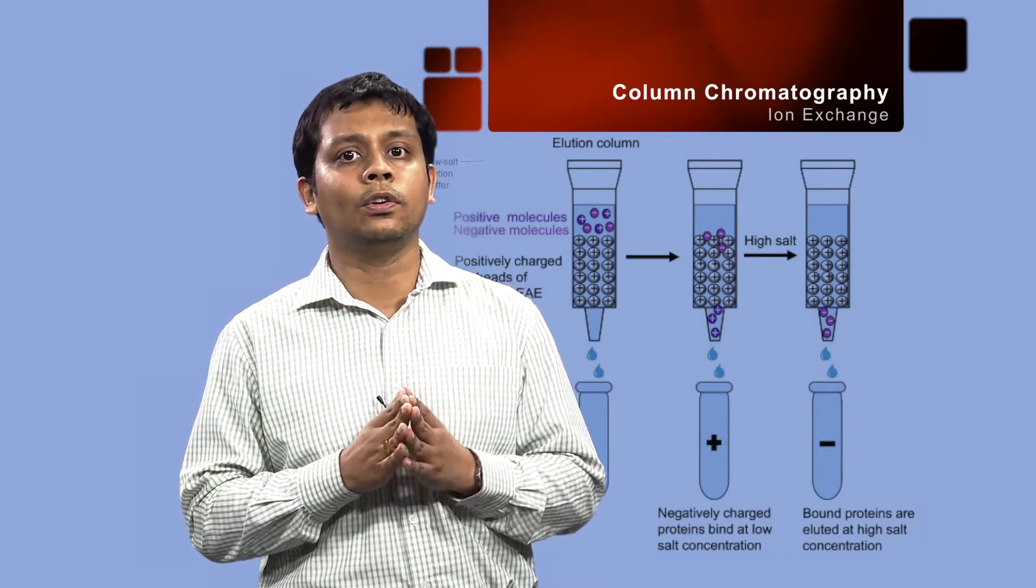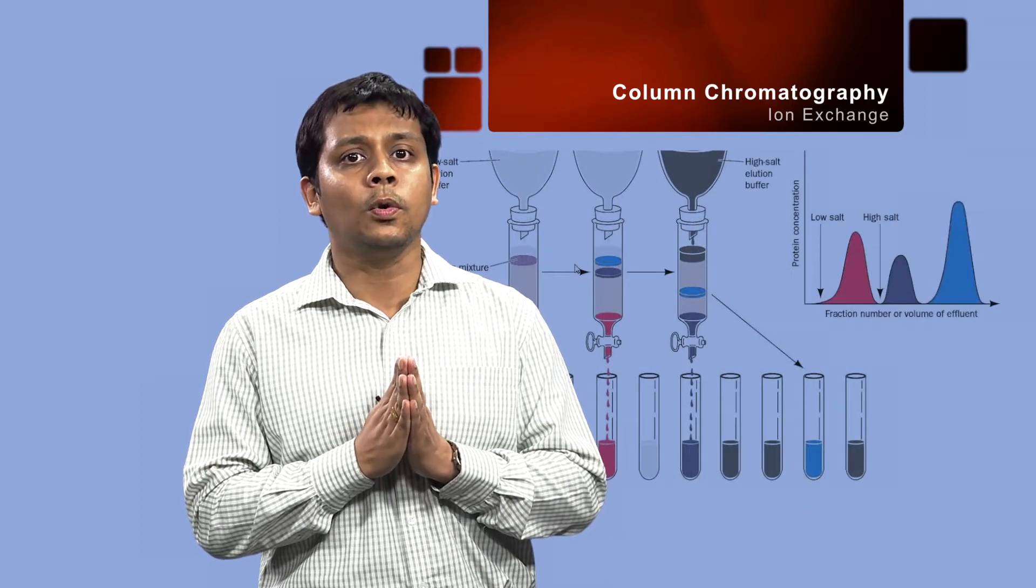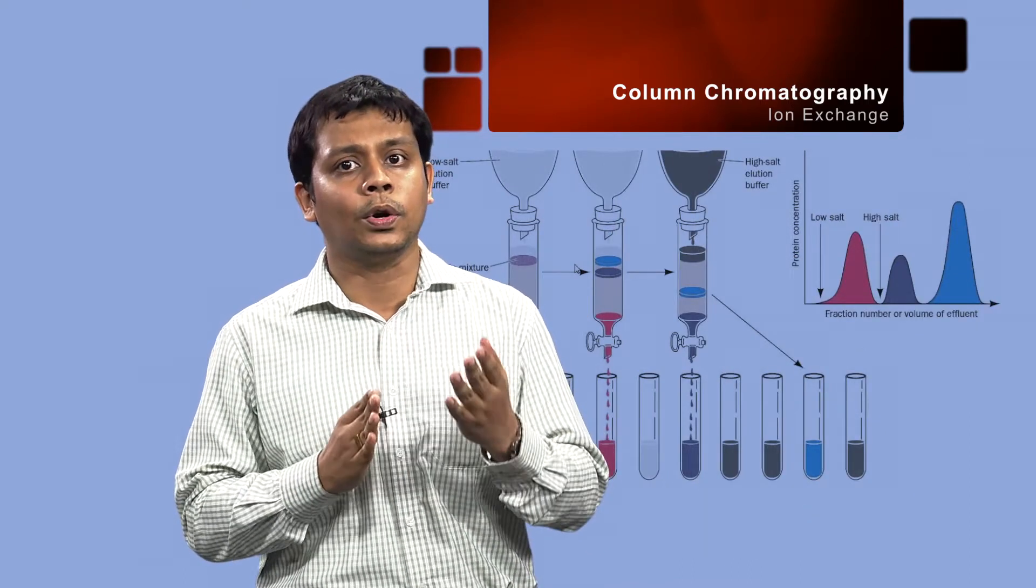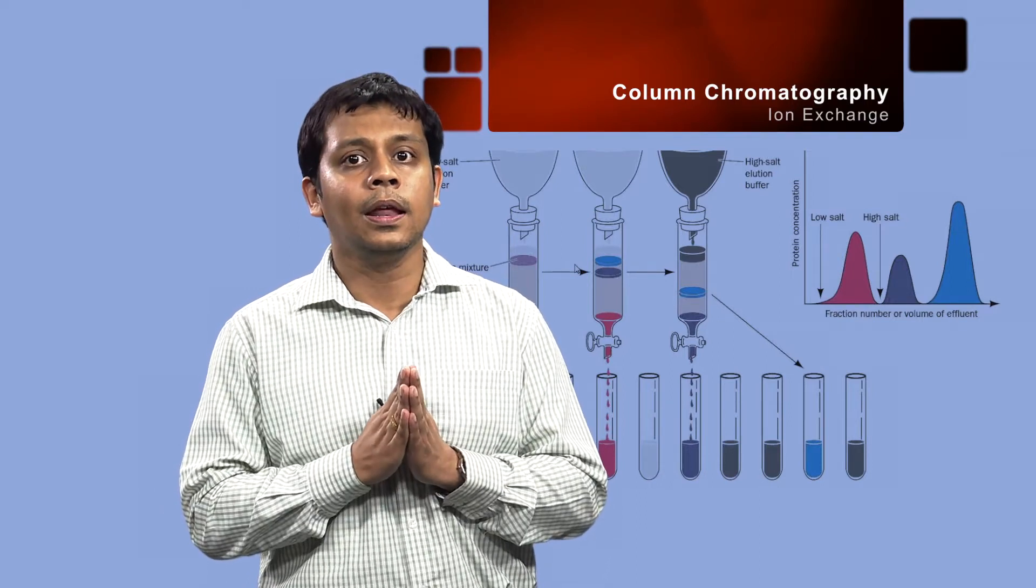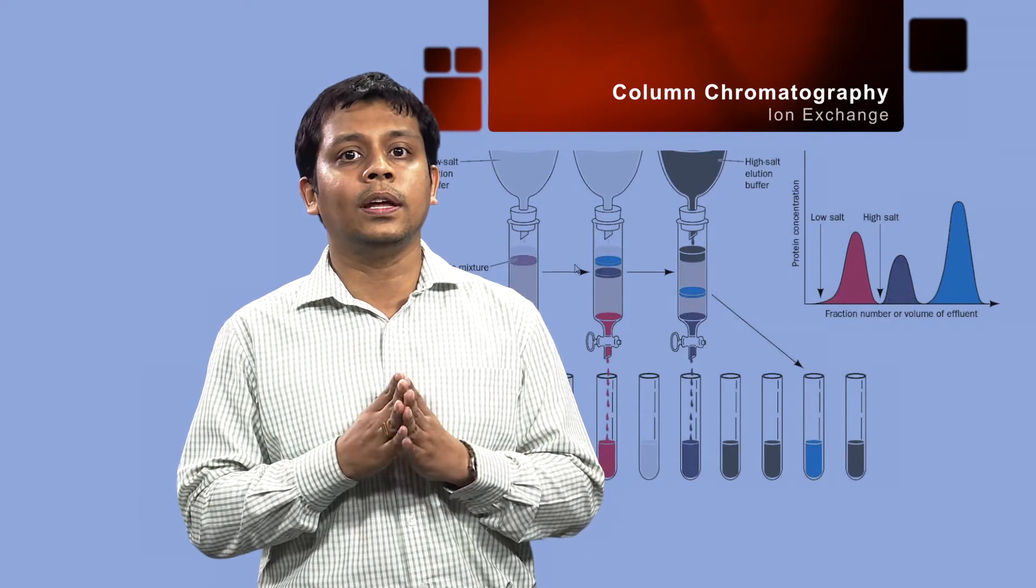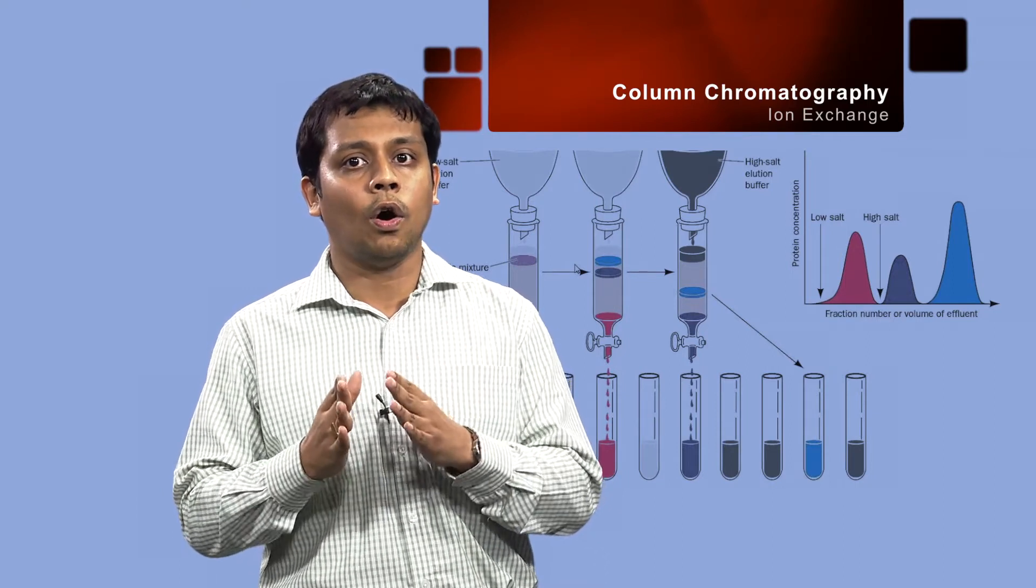Like in all other chromatography methods, column chromatography separates the components, that is pigments, proteins, etc., of a mixture based on their properties and how they interact with the stationary phase and/or mobile phase.